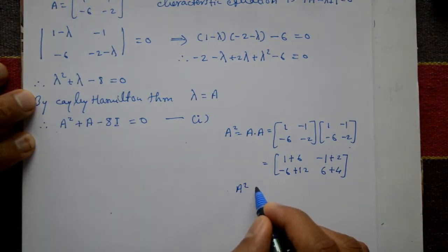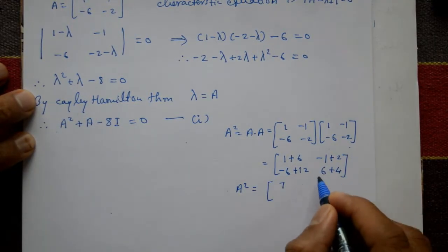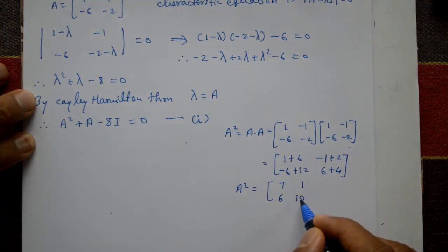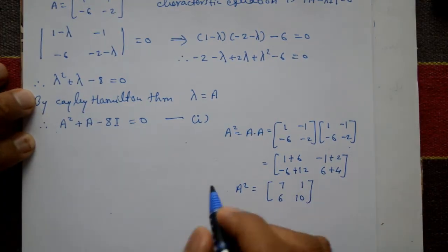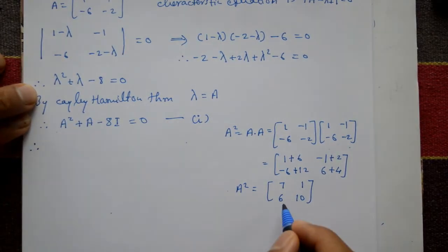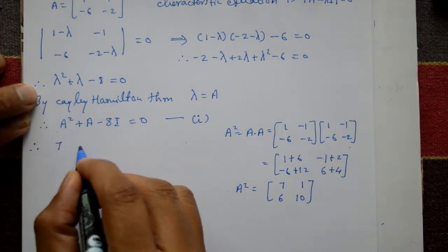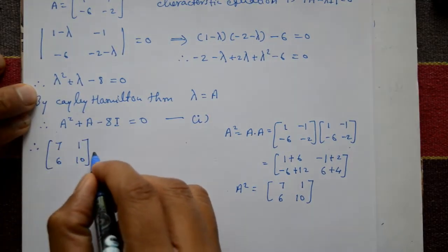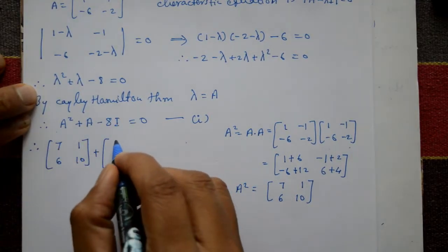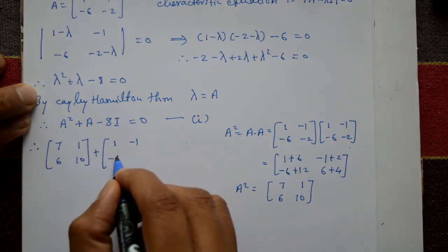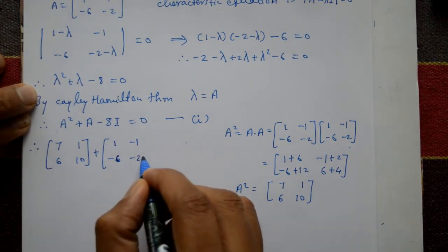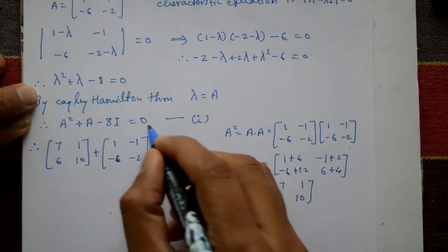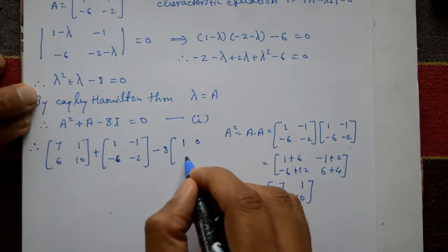So A² = [[7, 1], [6, 10]]. Now to verify, we compute A² + A - 8I: take A² = [[7,1],[6,10]], plus A = [[1,-1],[-6,-2]], minus 8I where I is the unit matrix [[1,0],[0,1]].